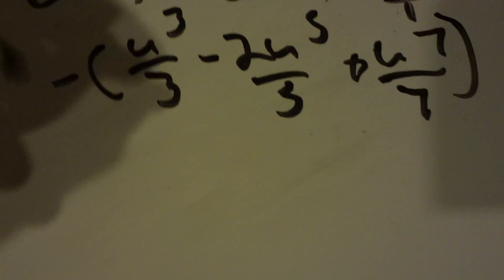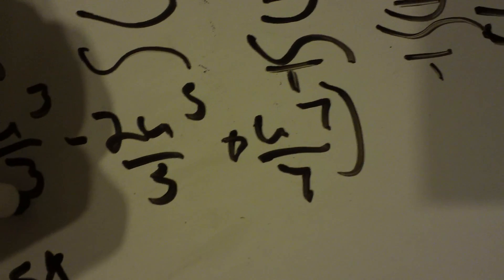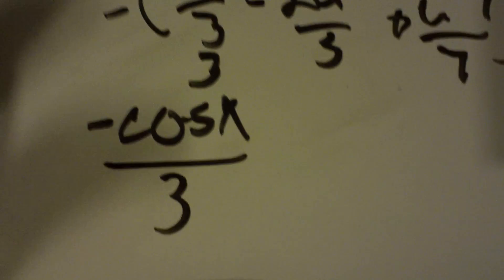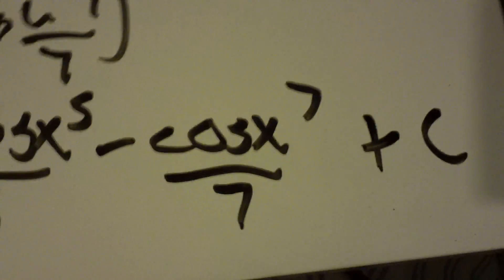So, all that is, is we're going to distribute our negative as we do this. Negative cosine x cubed over 3. Let me rewrite that. Put that right there so you can tell that's a negative cosine cubed. Distribute the negative so it would be a plus 2 cosine x to the 5th over 5. Distribute your negative again. It's going to be a minus cosine to the 7th over 7. And don't forget your plus c because it's an indefinite integral.